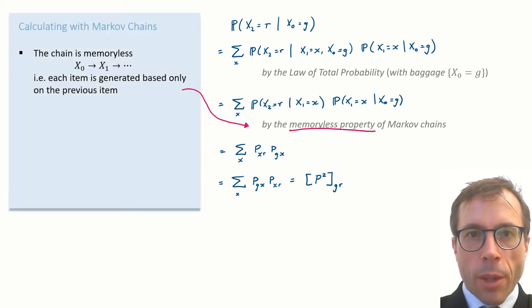The first key step is memorylessness. That's the defining feature of Markov chains, the idea that the next state is generated based only on the current state. So if we know the current state, we can throw away the past history.